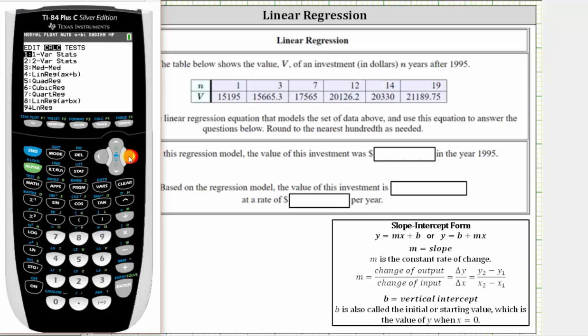And now we perform linear regression, which is option four, so we press four. The x list is in L1, which is correct, which is really n. The y list is in L2, which is really V. So this information is correct.